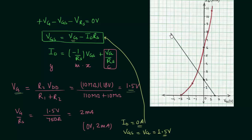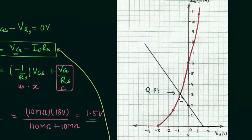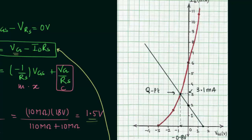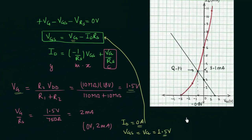Joining the two load line points gives the load line. The intersection of the load line and the transfer curve is the operating point. Reading off the coordinates: the corresponding Y coordinate (IDQ) is 3.1mA and the corresponding X coordinate (VGSQ) is -0.8V. So the answer is: VGSQ = -0.8V and IDQ = 3.1mA.